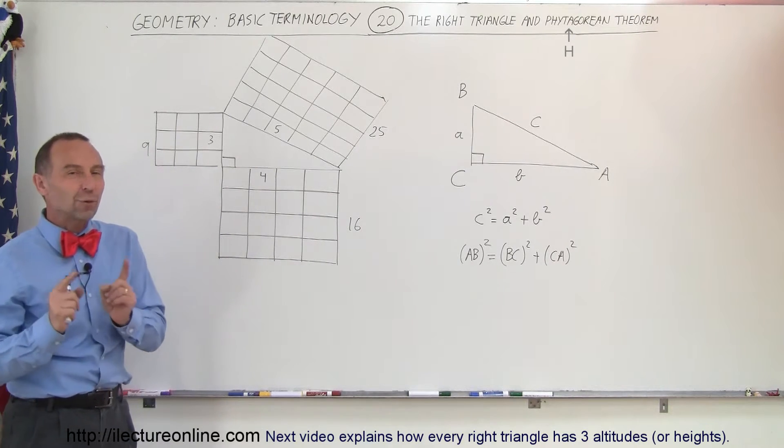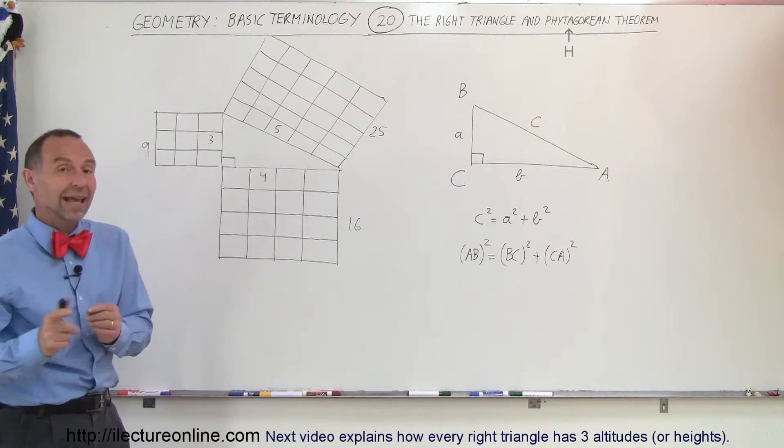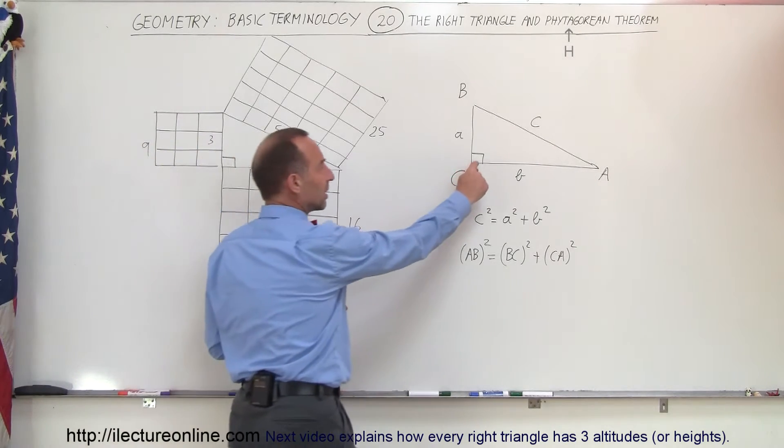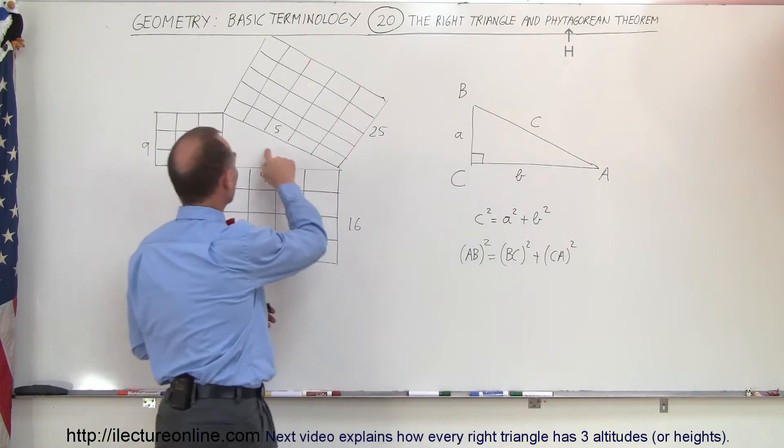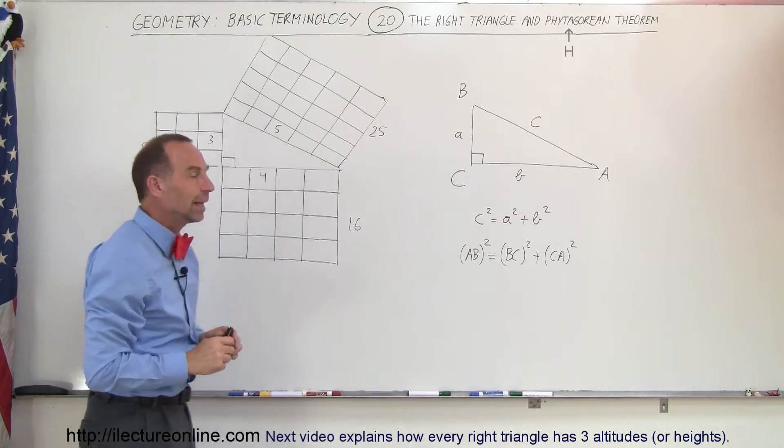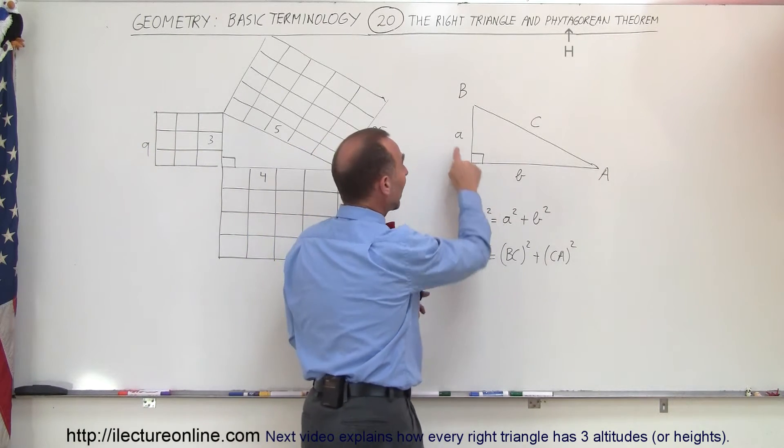Now the Pythagorean Theorem says that if you have a right triangle, which means a triangle that has a 90 degree angle, like this one right here has a 90 degree angle, this one right here has a 90 degree angle, and this one has three sides: A, B, and C.